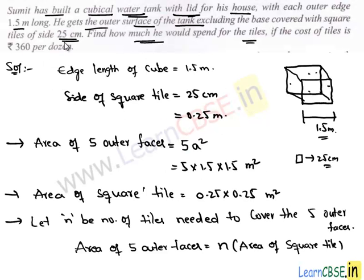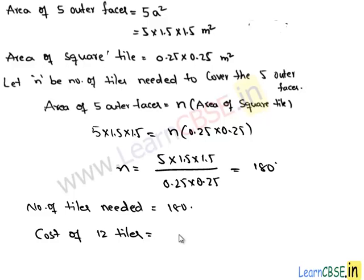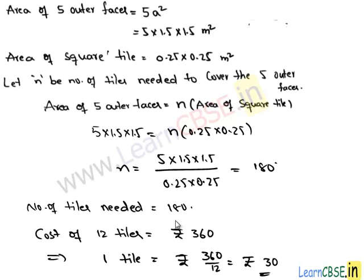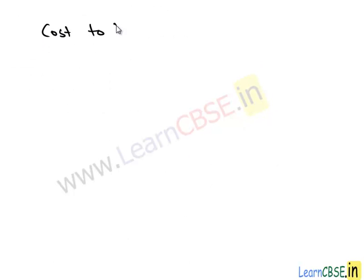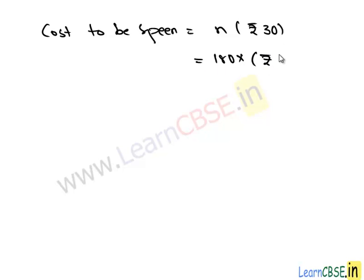The cost of tiles is 360 rupees per dozen, that is the cost of 12 tiles is 360 rupees. So the cost of 1 tile is 360 ÷ 12 = 30 rupees. We need 180 tiles, so the total cost is 180 × 30 rupees, which equals 5400 rupees.